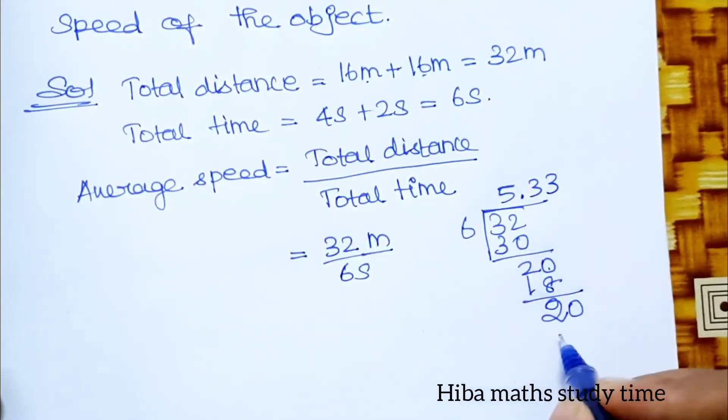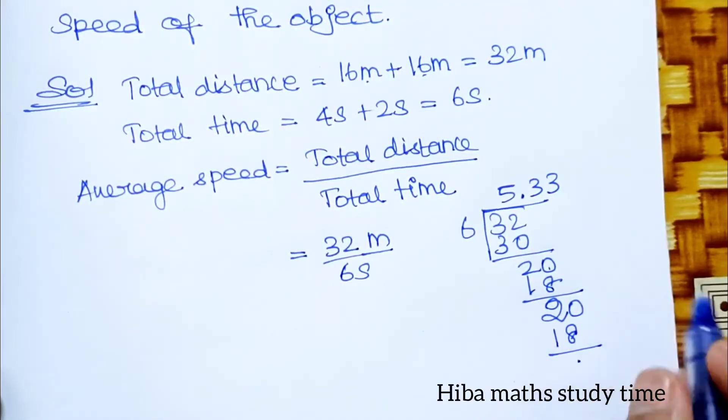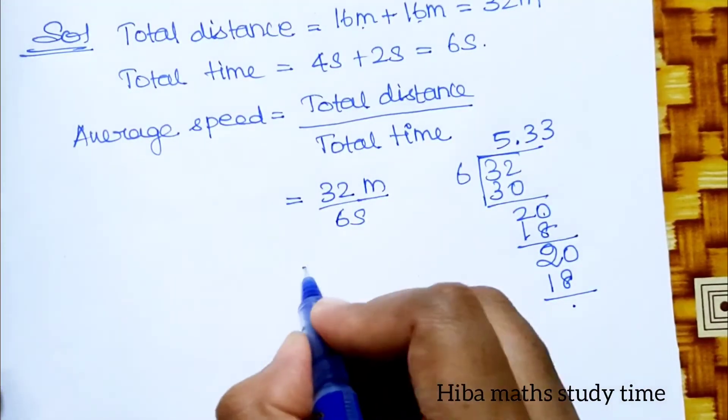6 times 3 is 18, 20 minus 18 is 2. 6 times 3 is 18, 20 minus 18 is 2. So the answer is 5.33.